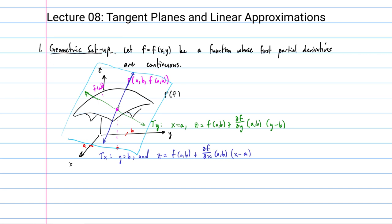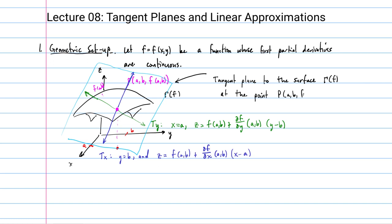The plane that is determined by these lines is called the tangent plane to the surface. This plane shares the point P and is otherwise tangent to the surface — just touching it at this point, and in every direction the surface curves away from the tangent plane. It's possible it could cross the tangent plane far away from this point. The idea is that this plane is the best plane approximation of the surface near this point.